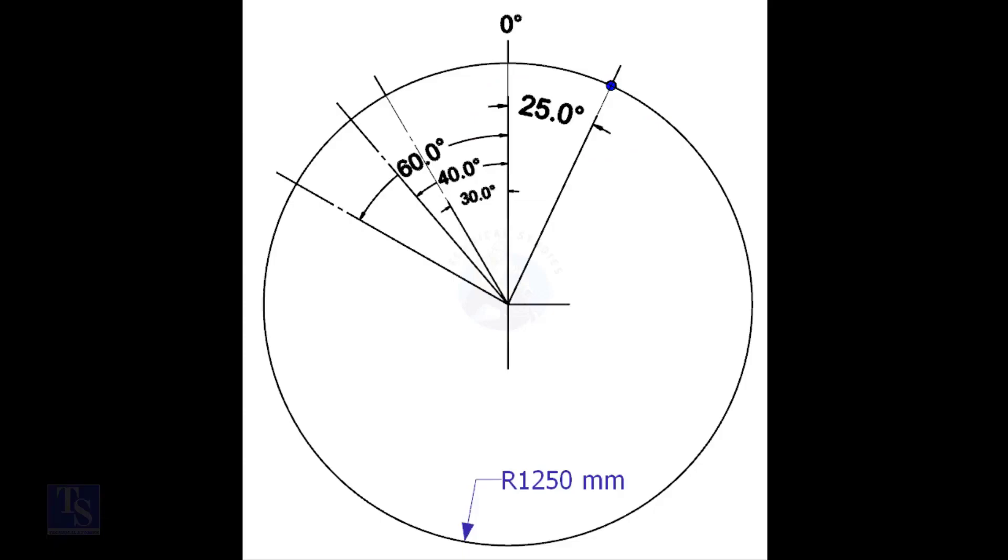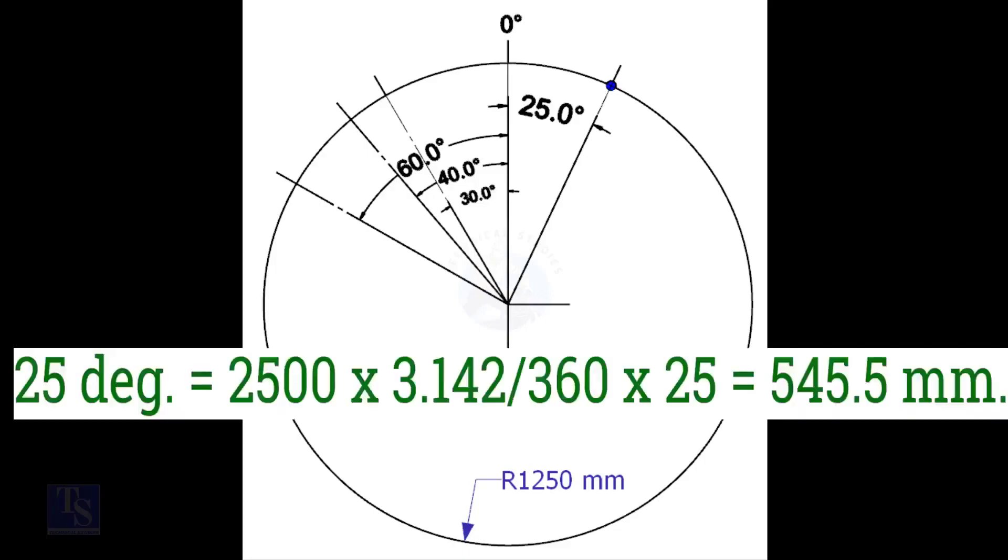We have the included degree and the diameter of the tank. Let us calculate the arc length. Arc length for 25-degree is equal to outer diameter into 3.142 divided by 360 into 25, is equal to 545.5 millimeters.